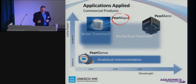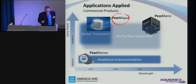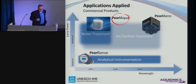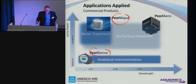The Pearl Arrow employs LEDs, makes them air-cooled, and applies them to applications in air and surface treatment. The Pearl Sense is using a 254 nanometer wavelength LED to measure UV transmittance as an analytical instrument, and we may see more analytical instruments in the future.